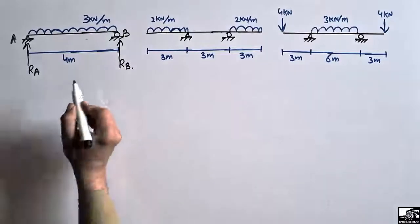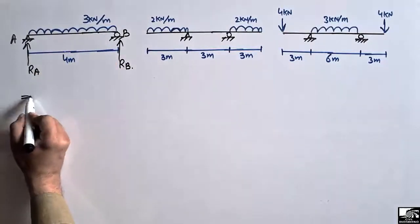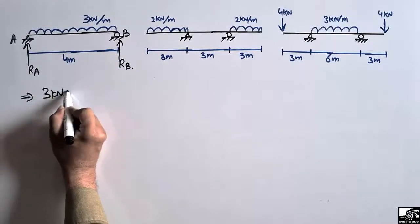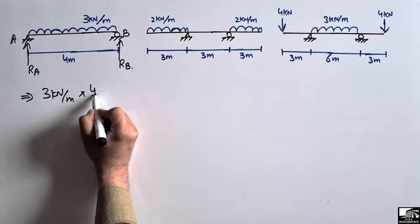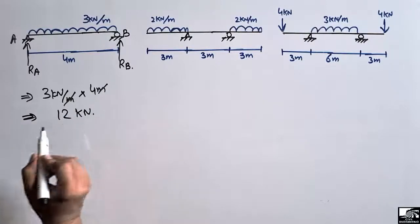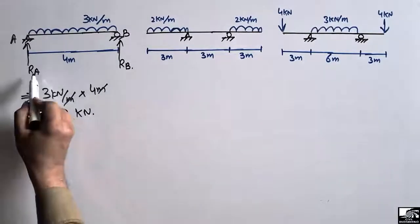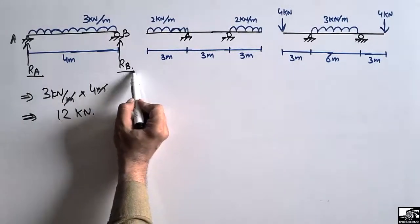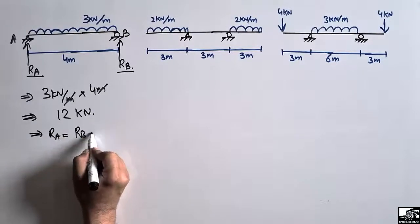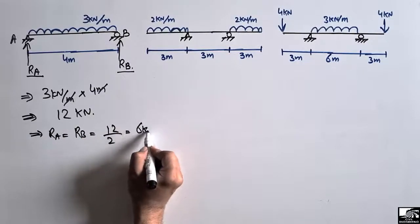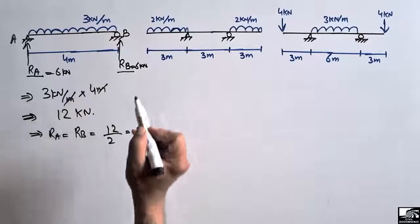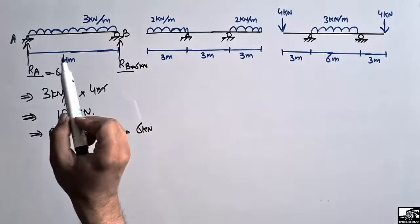To find out the support reactions, the total load is 3 kN per meter. Multiply this distributed load over the length: 3 kN/m multiplied by 4 meters gives us 12 kN. Now divide this load by 2 because half the load will be taken by each support. So RA = RB = 12 ÷ 2 = 6 kN. This means 6 kN is taken by each support. This is the easy way to find support reactions when there is symmetric loading on the beam.